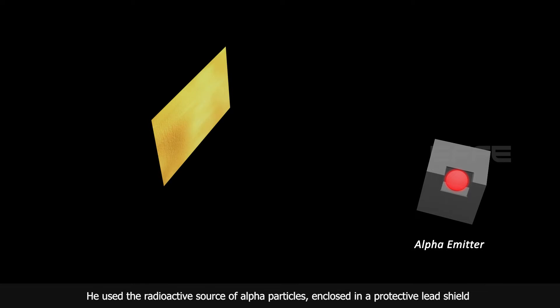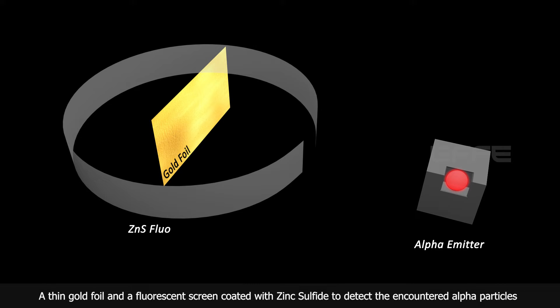Rutherford used the radioactive source of alpha particles, enclosed in a protective lead shield, a thin gold foil and a fluorescent screen coated with zinc sulfide to detect the encountered alpha particles.